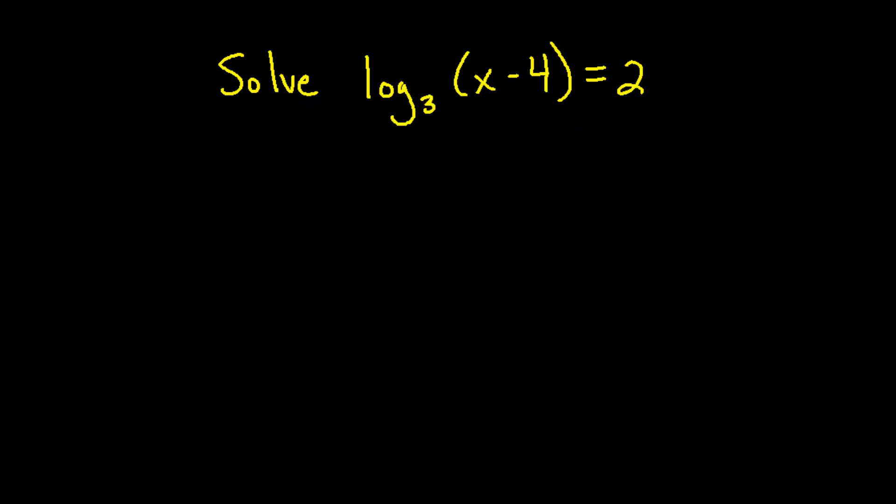This problem involves a logarithmic equation. When there is a log on just one side of the equation we often want to rewrite the logarithm into exponential form. We can do this by taking the base of 3 to the exponent 2 and setting it equal to the argument which is x minus 4.